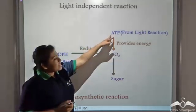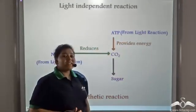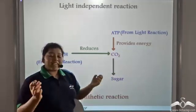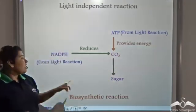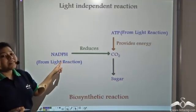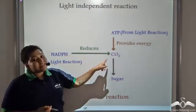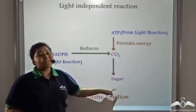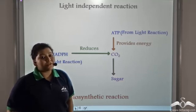ATP from the light reaction provides energy to the carbon dioxide taken from the atmosphere, and NADPH also from the light reaction reduces this carbon dioxide to form sugar, which is the main aim of photosynthesis.